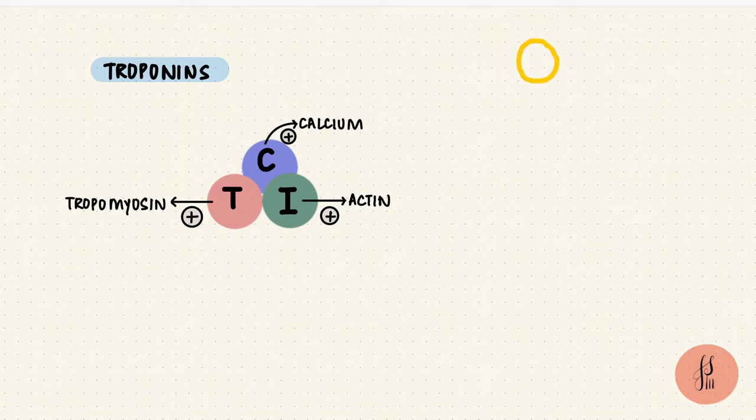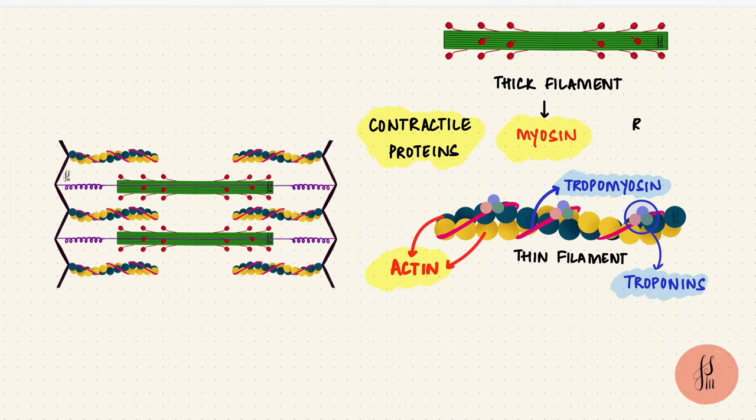So what does troponin do? If we assume this is actin with its binding site for myosin, and this is the head of myosin with the binding site for actin, tropomyosin covers the binding sites on actin. When calcium binds to troponin C, that creates a conformational change, moving tropomyosin out of the way so that actin and myosin can bind. So you can see how it's super important for the contraction to happen.